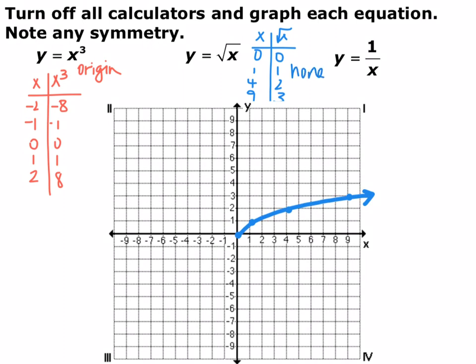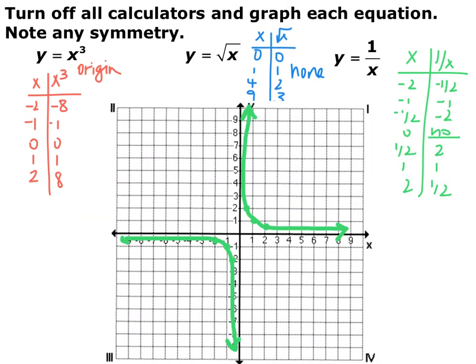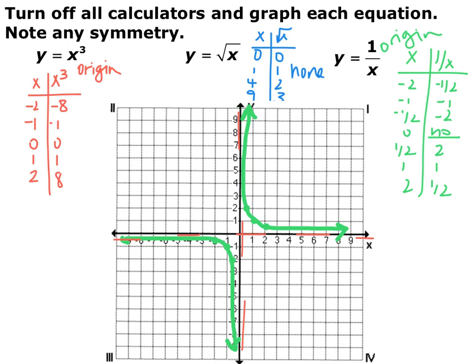Go ahead and pause the video and try y equals 1 over x. In this one I picked some points, and you end up with curves in both the first quadrant and the third quadrant. It actually has asymptote lines on y equals 0 and on x equals 0. There's no x-axis symmetry and no y-axis symmetry, but it does have origin symmetry. Make sure you can find symmetry — whether x, y, and or origin — both algebraically and by looking at a graph, and make sure you can plot points and graph a function.